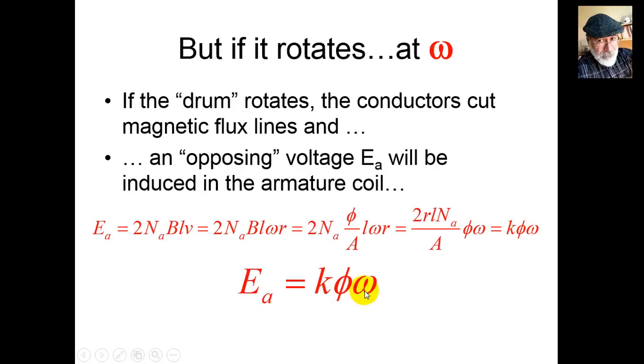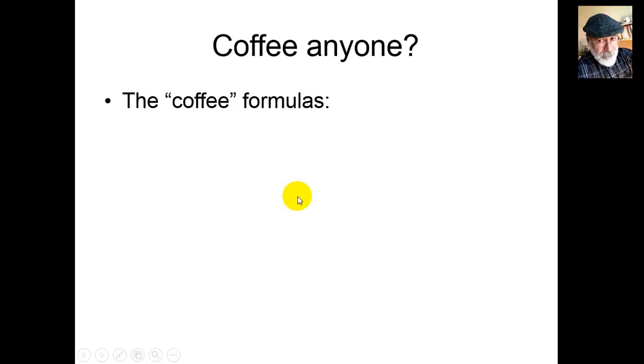and write that induced voltage in that armature is going to be k·φ·ω radians per second. k·φ·ω, that is the induced voltage in the armature.